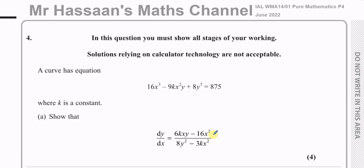Normally in P1 or P2 we would make y the subject and then differentiate both sides with respect to x. But here it's very difficult to make y the subject because y appears in two different parts — once as y and once as y³. So we cannot use explicit differentiation where we have y as some function of x; we have to use implicit differentiation.